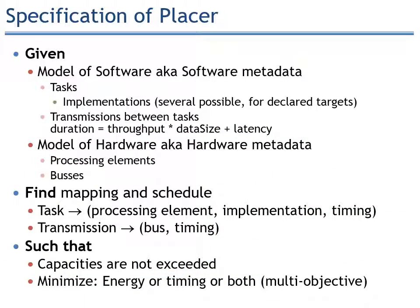Here you have a more complete specification of Placer. Given the model of the software and the model of the hardware, it finds the mapping and the schedule such that capacities are not exceeded. The model of the software is sometimes also referred to as the software metadata, and includes tasks and transmissions. Tasks can have several implementations — that's the interesting part — and Placer will need to choose which implementation for each task is to be used. An implementation can have several targets: you can have one task with one implementation targeting FPGA and another targeting CPU, and a third one targeting FPGA again.